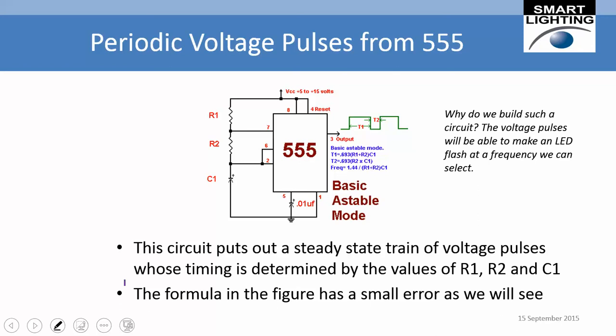Here's the 555 timer circuit. The chip has eight connections — it's an eight-pin integrated circuit. Ground is connected to pin 1, and a voltage source from 5 to 15 volts is connected to pins 8 and 4. The output comes from pin 3, and what really controls its operation are the components connected to pins 7, 6, and 2.